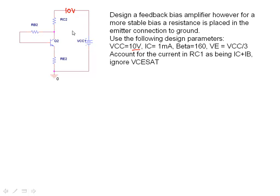Collector current here is 1 milliamp. The value of beta for this transistor is 160 and our emitter voltage VE is equal to a third supply which is 3.3 recurring volts. I account for the current